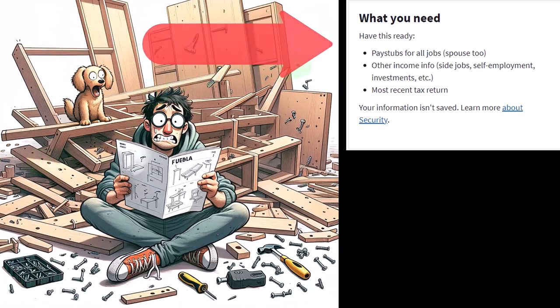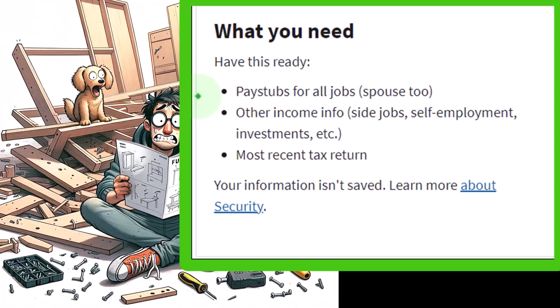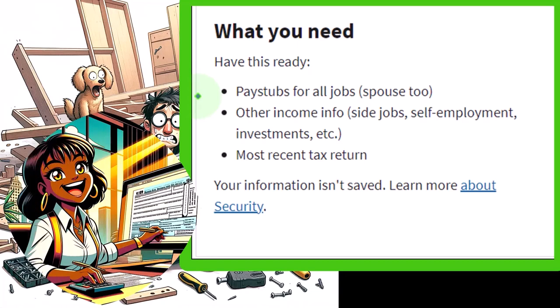So what you need to have ready: in order to figure out your withholdings, you would need the pay stubs for the job. Why the pay stubs? Because you don't yet have the W-2s. The idea with the withholdings is you're trying to figure out your withholdings before you get the W-2, because you're trying to pay your taxes before the end of the year — before the tax return is due — to avoid getting hit with penalties and interest.